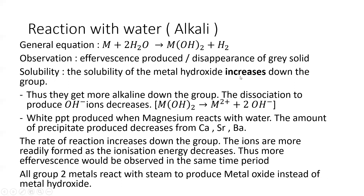Since solubility increases, they get more alkaline down the group because dissociation to produce OH⁻ ions increases. One metal hydroxide will dissociate to form a metal 2+ ion and two hydroxide ions. Because it gets more alkaline down the group, the OH⁻ ions increase.